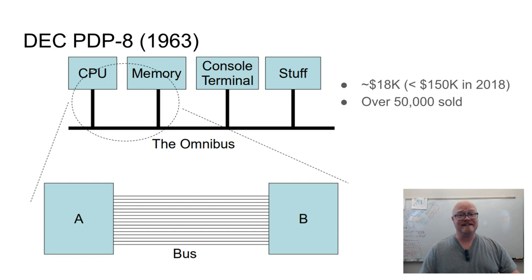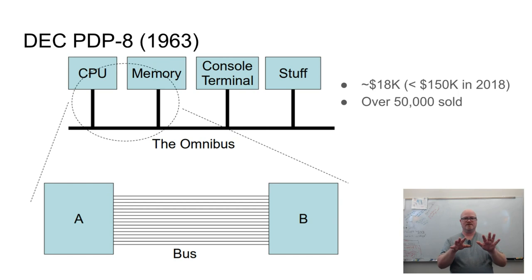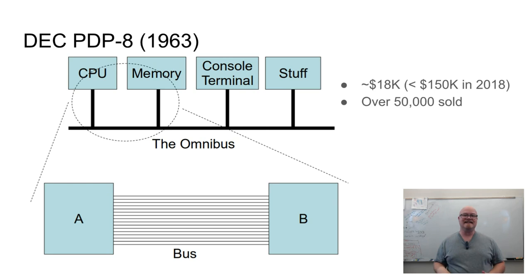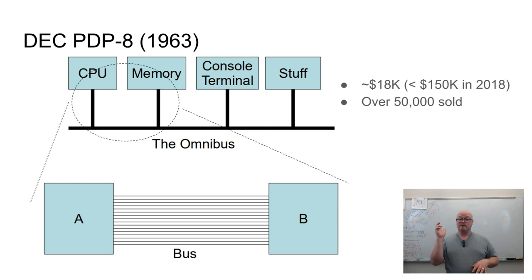What made the Omnibus special was not just that many things were connected to the same pipeline of wires — what made it unique was that many of the different elements along the Omnibus could be removed from the bus and replaced with something else. It's not exactly the plug-and-play technology we have today, but it's the same fundamental concept. Instead of a hardwired backplane, the major components could be individually removed and replaced or duplicated.